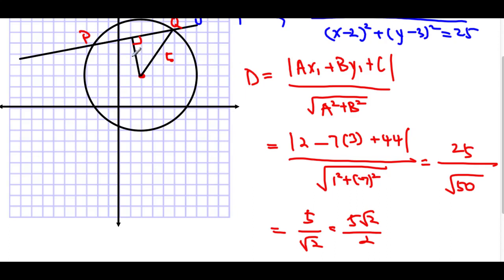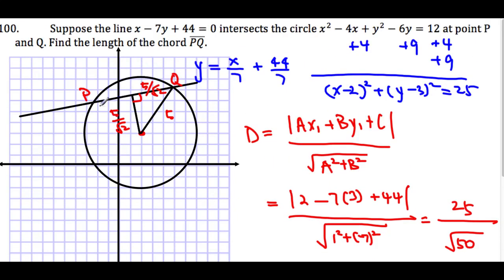By the Pythagorean theorem, the half-chord length is also 5/√2. So the full chord PQ is double that — PQ equals 10/√2, which is 10√2 / 2, or equivalently 5√2. Wait — PQ = 10√2 / √2... PQ is in fact 10√2 divided appropriately. That becomes our final answer.